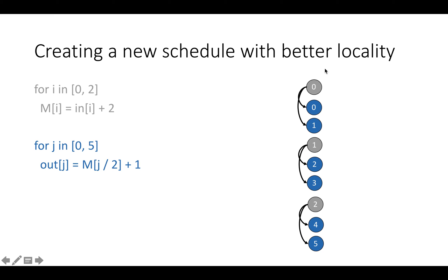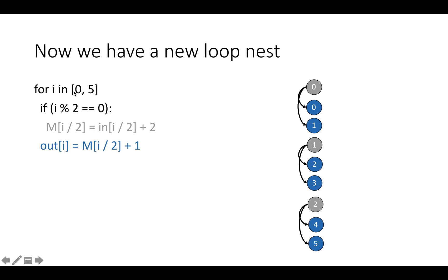And we can think of this new schedule in which readers of memory locations are closer to data writers as another loop nest. So we can actually think of this as a single fused loop nest, which goes from zero to five. And if i mod 2 is zero, we're going to do M[i/2] equals in[i/2] plus two. And on every iteration, we're going to do out[i] equals M[i/2] plus one.